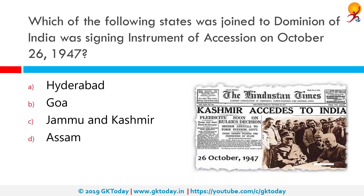Which of the following states was joined to the Dominion of India by signing the Instrument of Accession on October 26, 1947? The correct answer is Jammu and Kashmir. Immediately after independence, a major column of armed men from Pakistan had invaded Kashmir and they were nearly successful in capturing Srinagar. Confronted with the chance of losing Kashmir to Pakistan, Maharaja Hari Singh requested help from India.